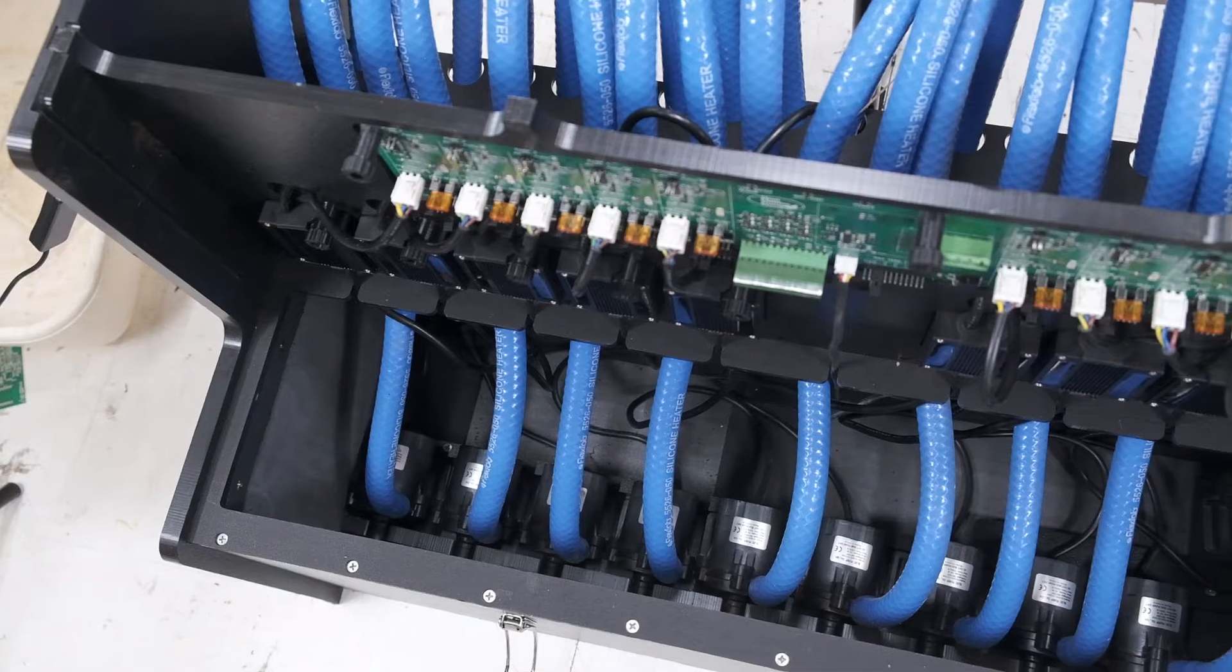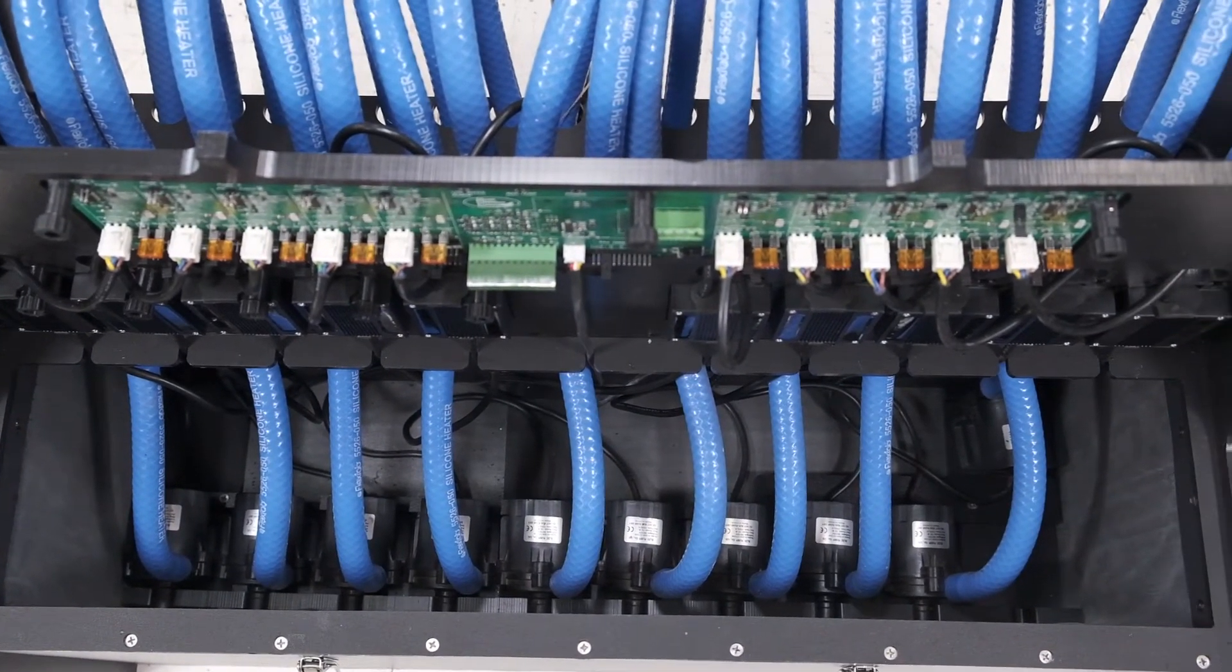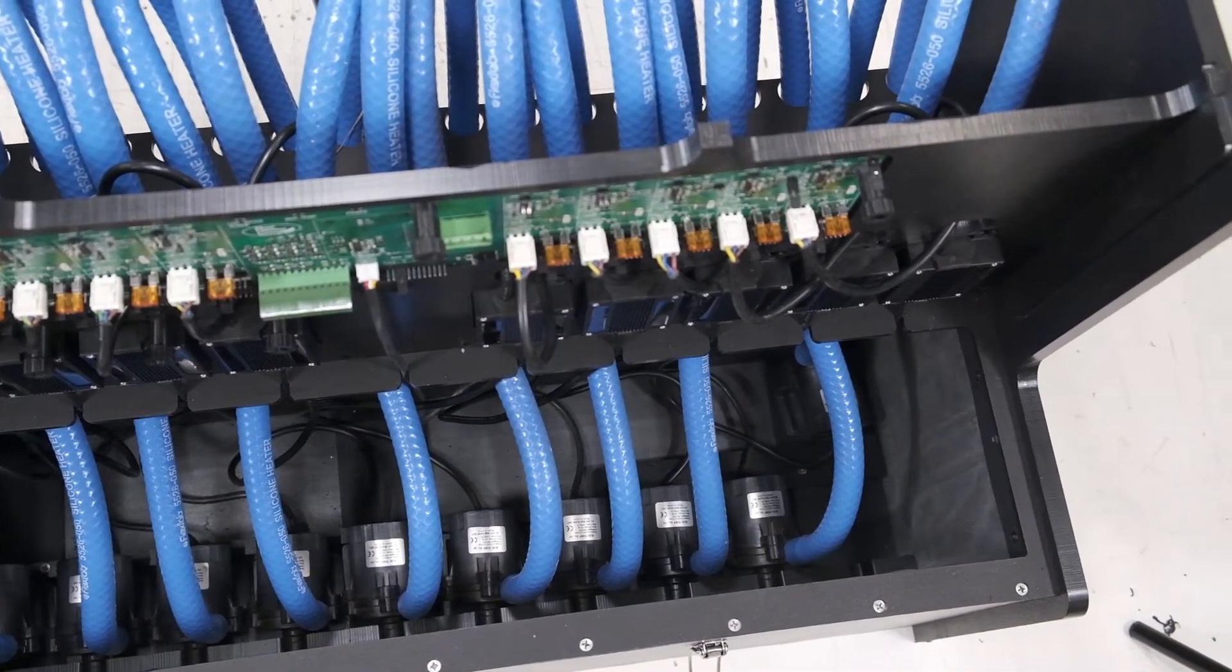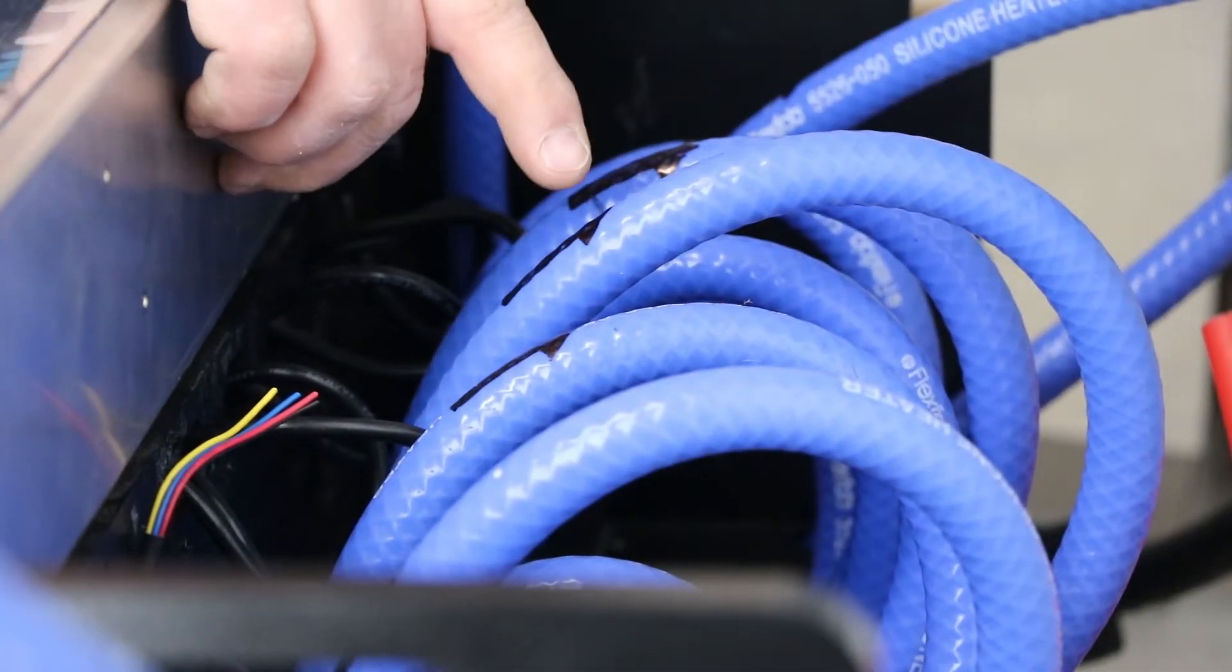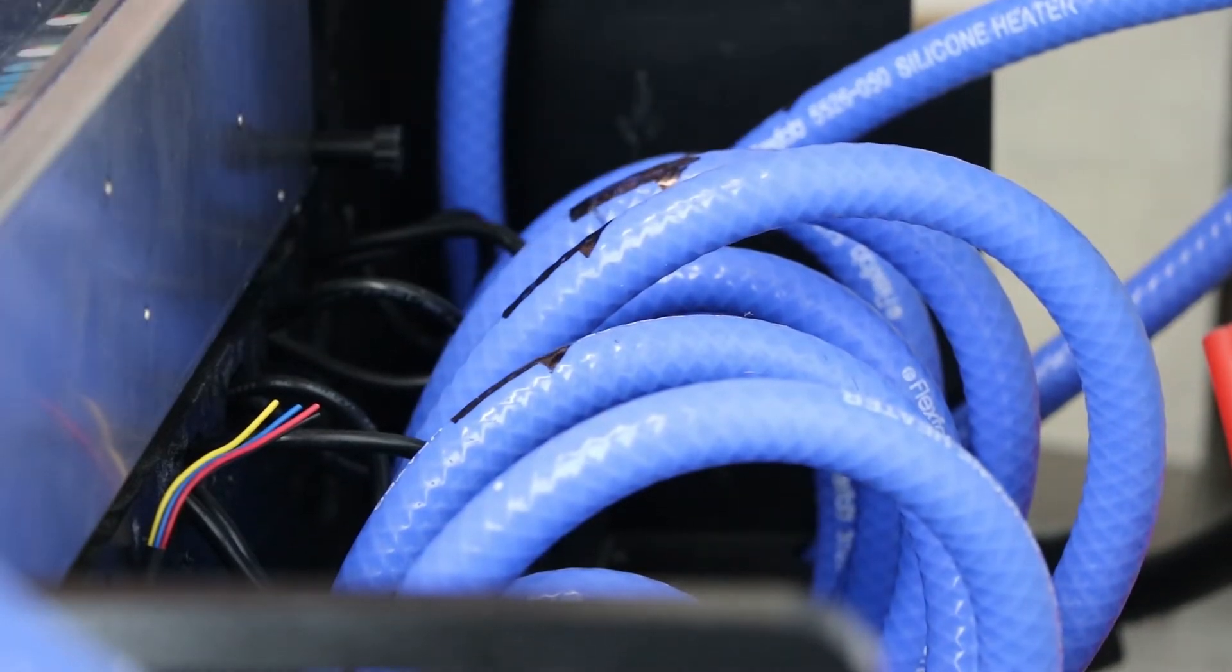Next, we'll connect the source and return hoses to the PEX pipes. Note that the hoses come out in two rows and are marked with arrows, indicating flow into and out of the tank.